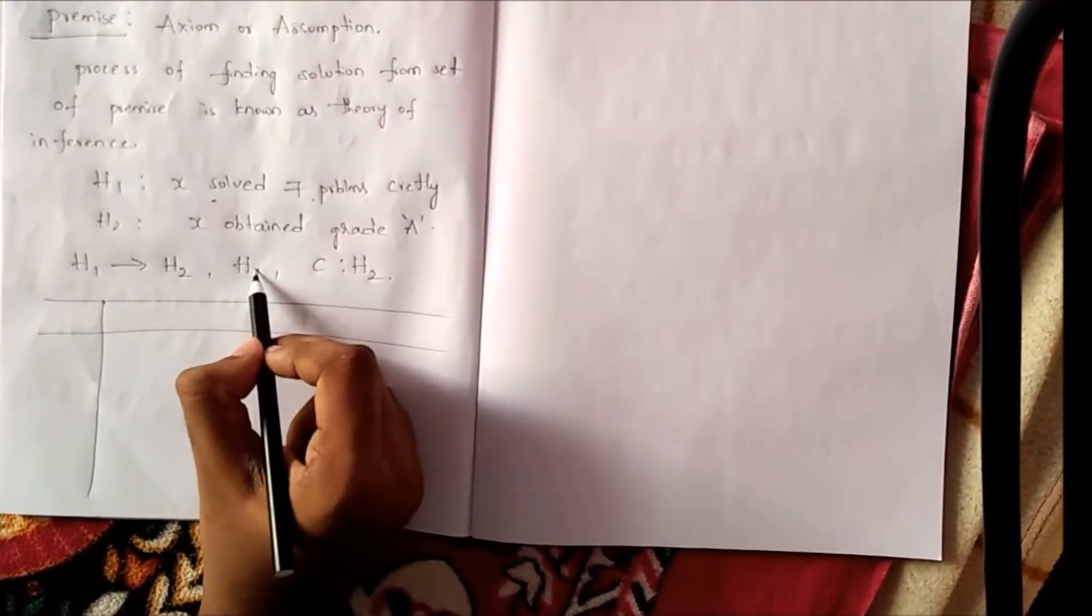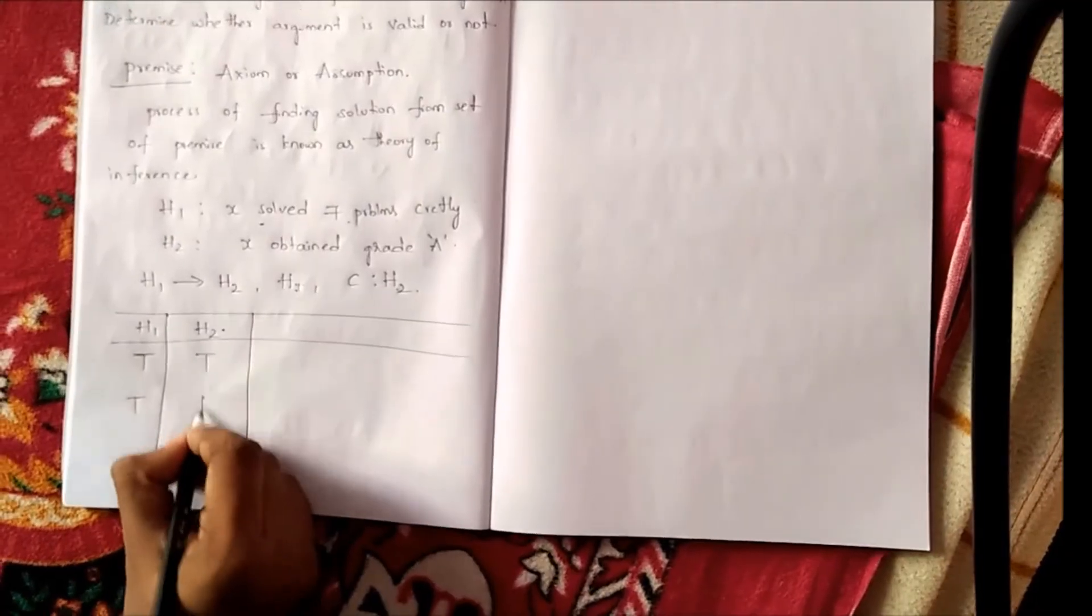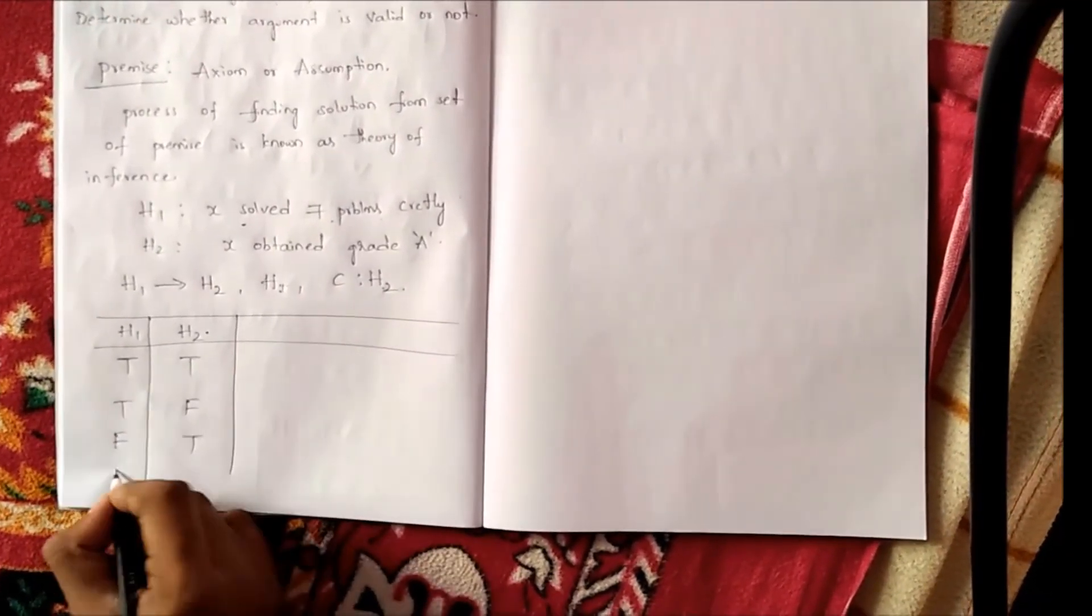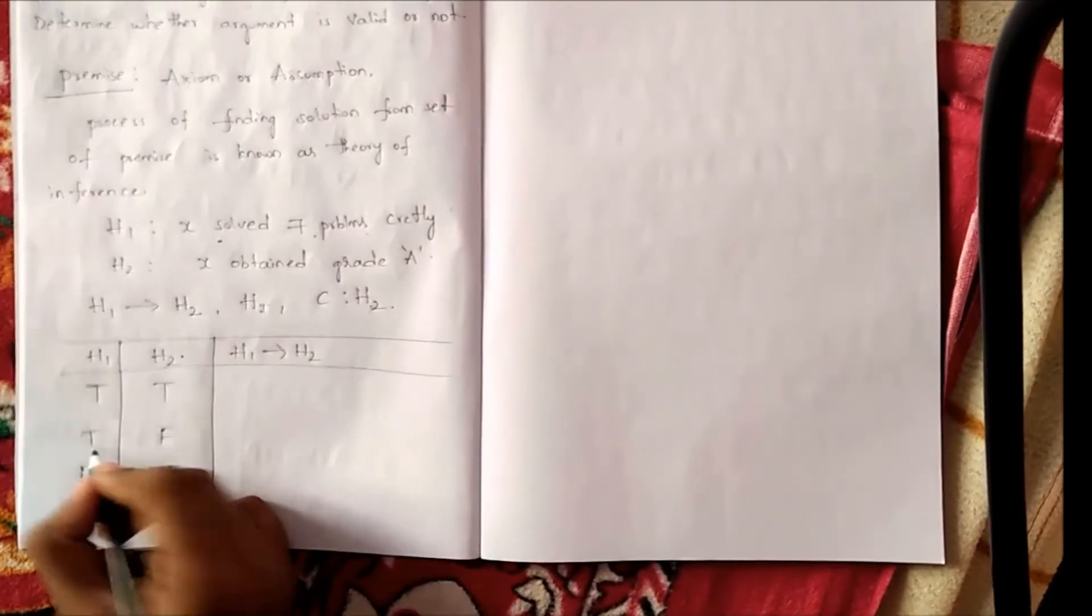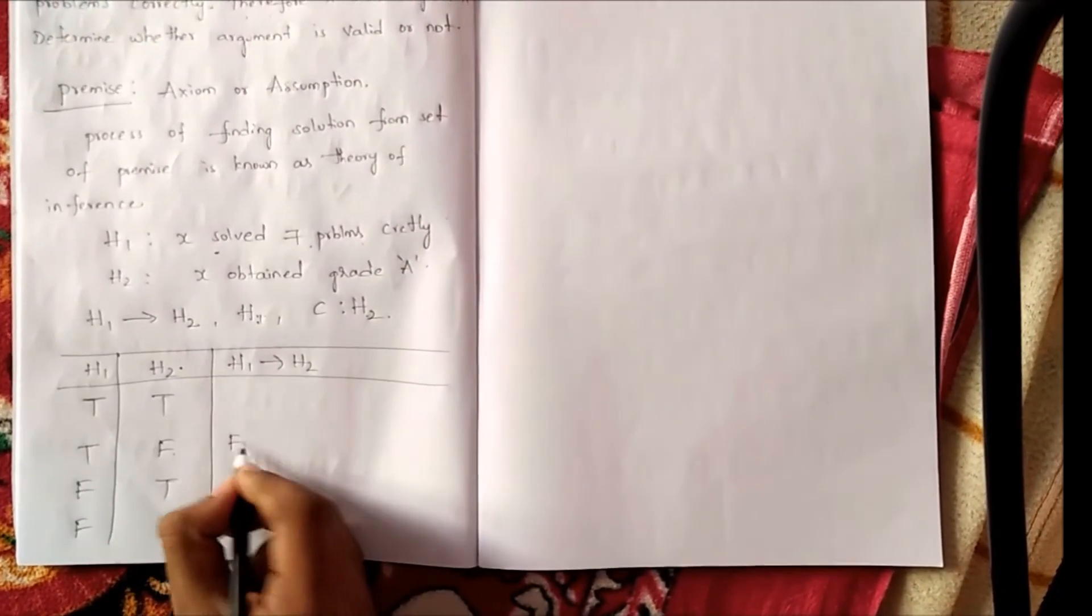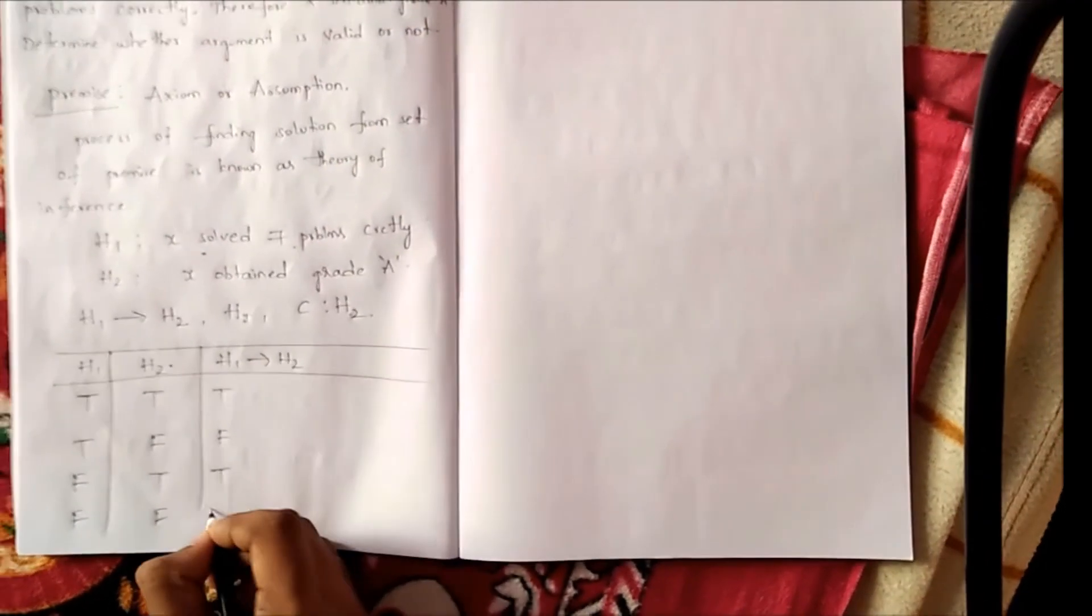Now write construct truth table for this. H1, H2. See, we have used two statements. Therefore, combinations will be four. H1 implies H2 means first statement true, second statement false. We will get result as false. Remaining result will be true.